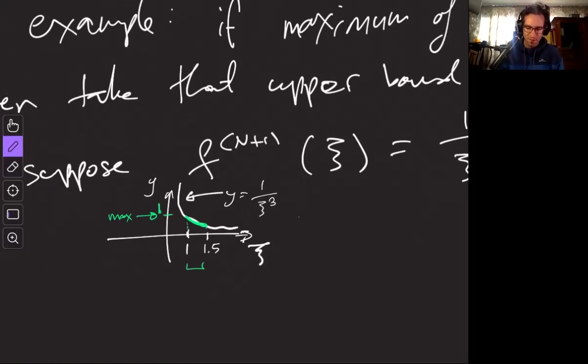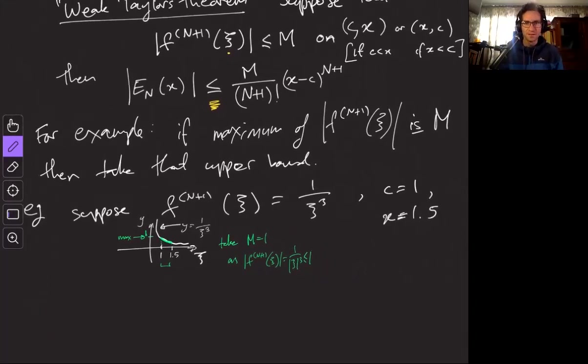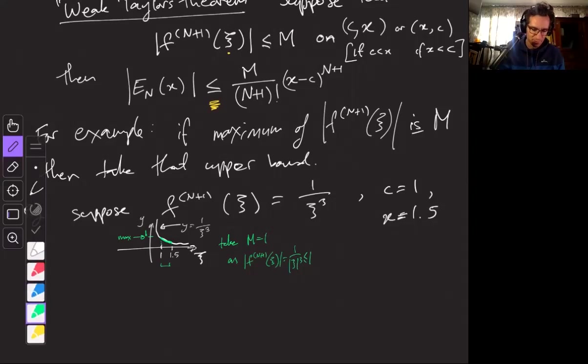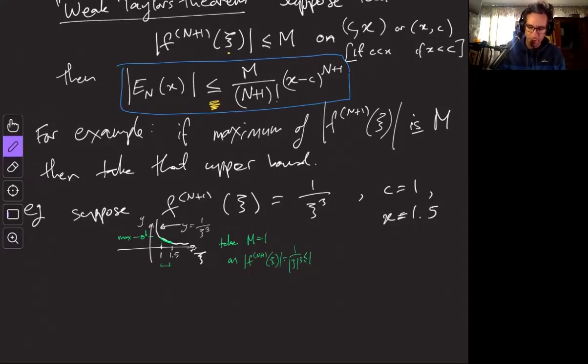And so I can take m equals 1. It's positive here so the absolute value doesn't really matter, which equals 1 over xi cubed is less than or equal to 1. And then I can feed that back into my estimate. And the good bit is once you have this upper bound, this is just a number. So back in this formula here, m is a constant.